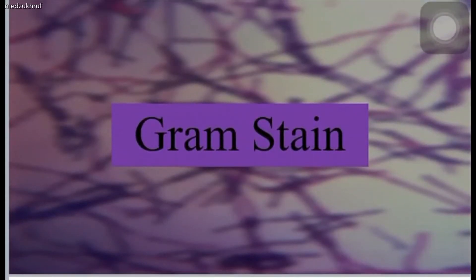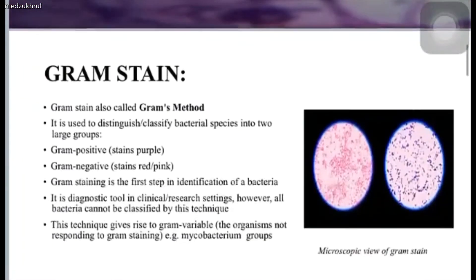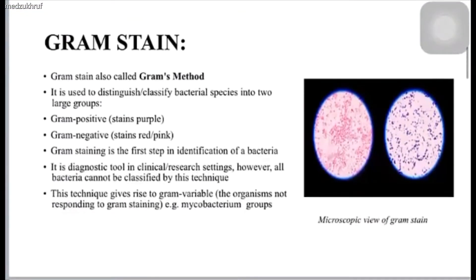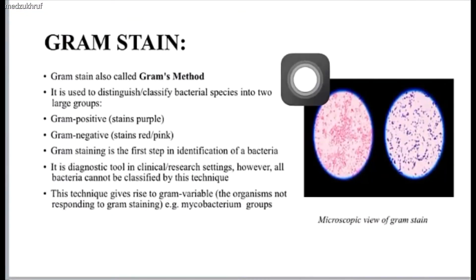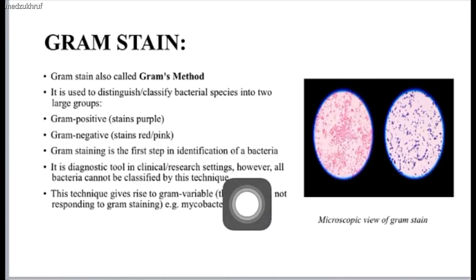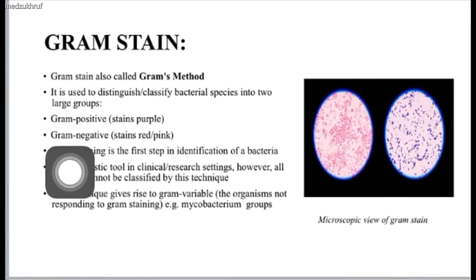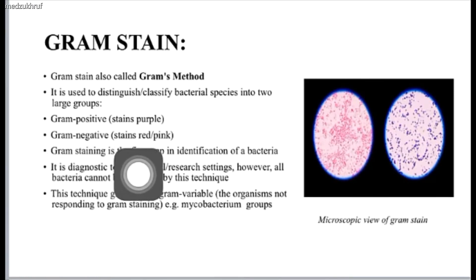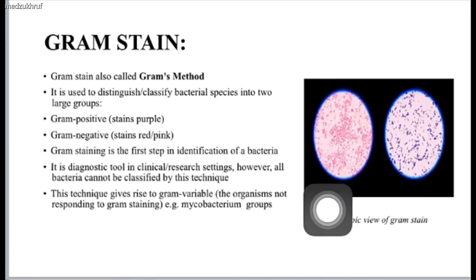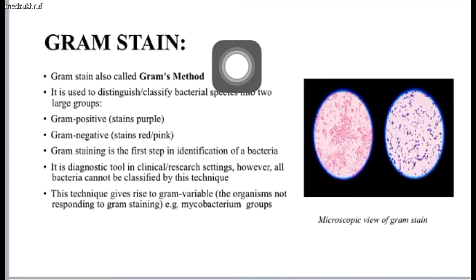Today we discuss Gram stain. Gram stain is the method to classify bacterial species into two large groups: gram positive, which stains purple as you can see here, and gram negative, which stains red or pink as you can see here. This is also the first step in identification of bacteria and a valuable diagnostic tool in clinical and research centers.